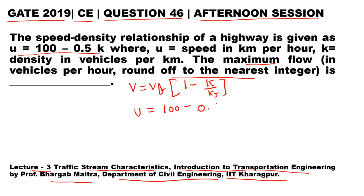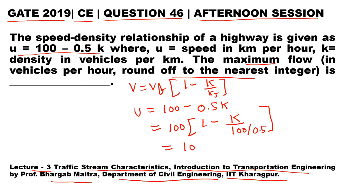Let us convert the given equation into standard form. Taking out 100, we get: 100 × (1 - k / (100/0.5)), which equals 100 × (1 - k/200).